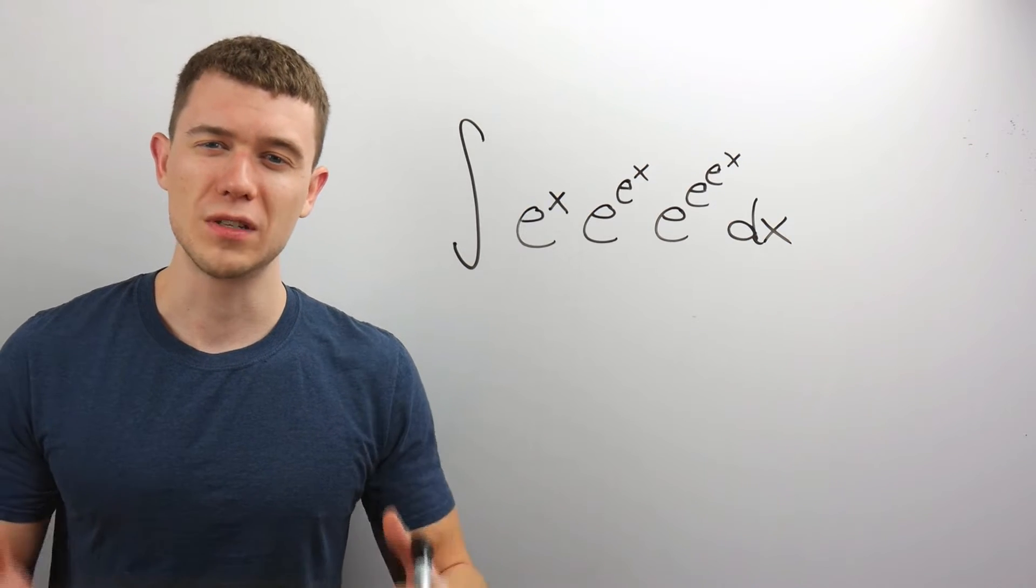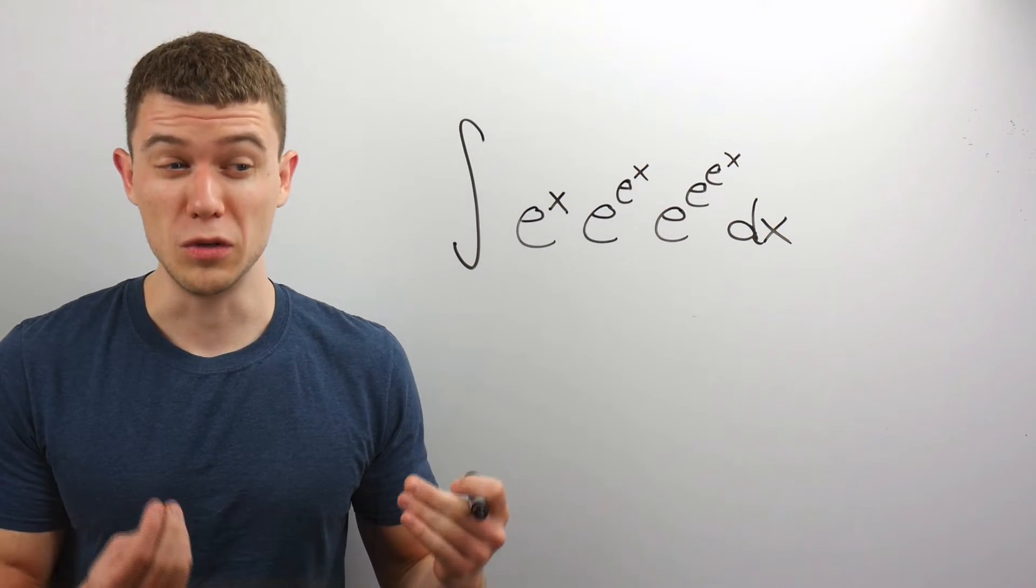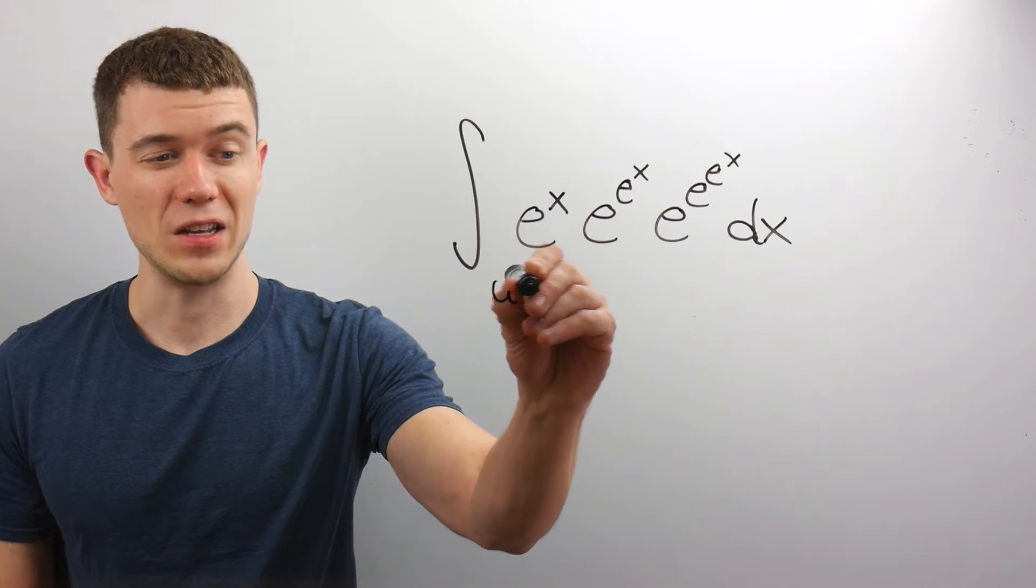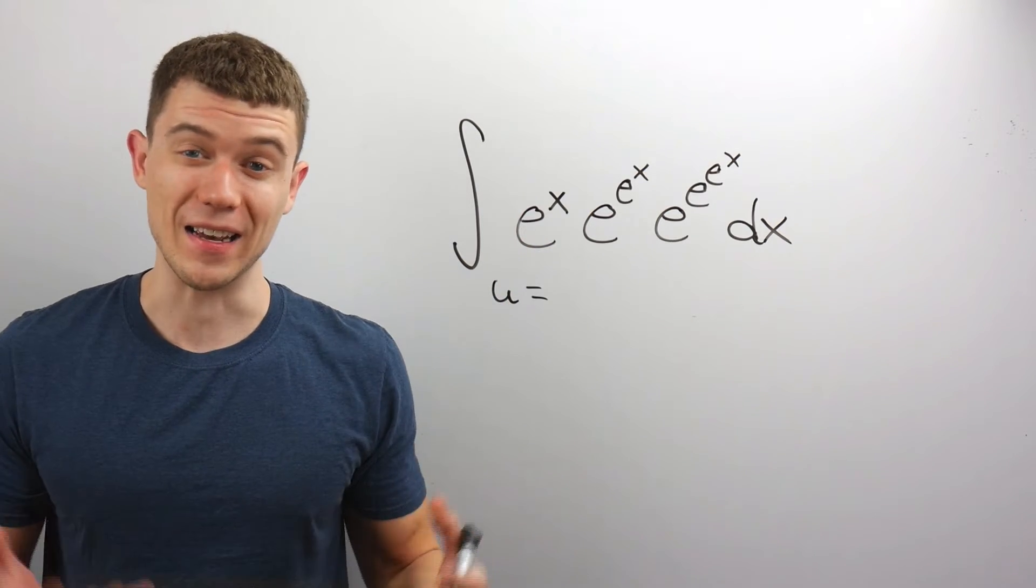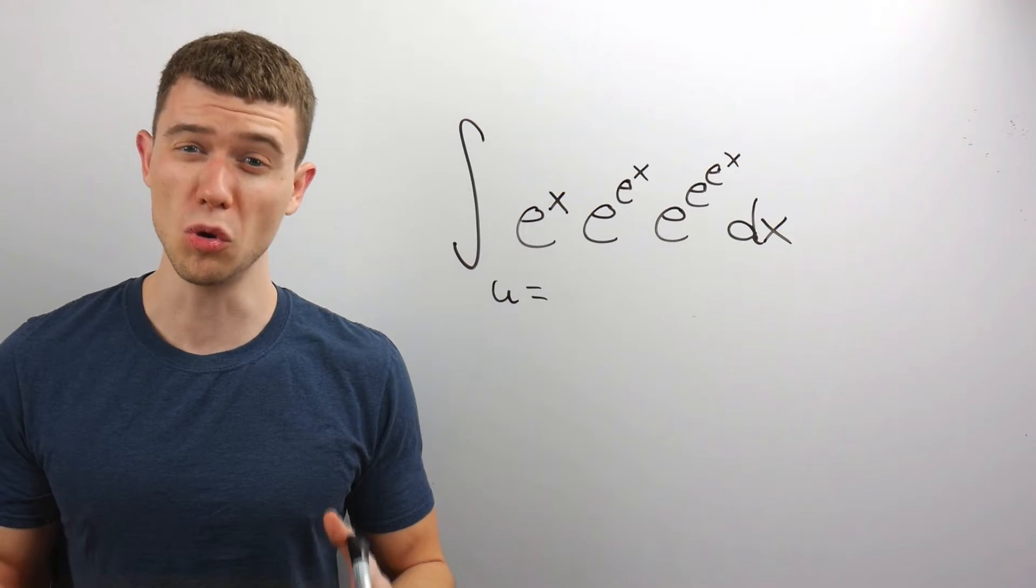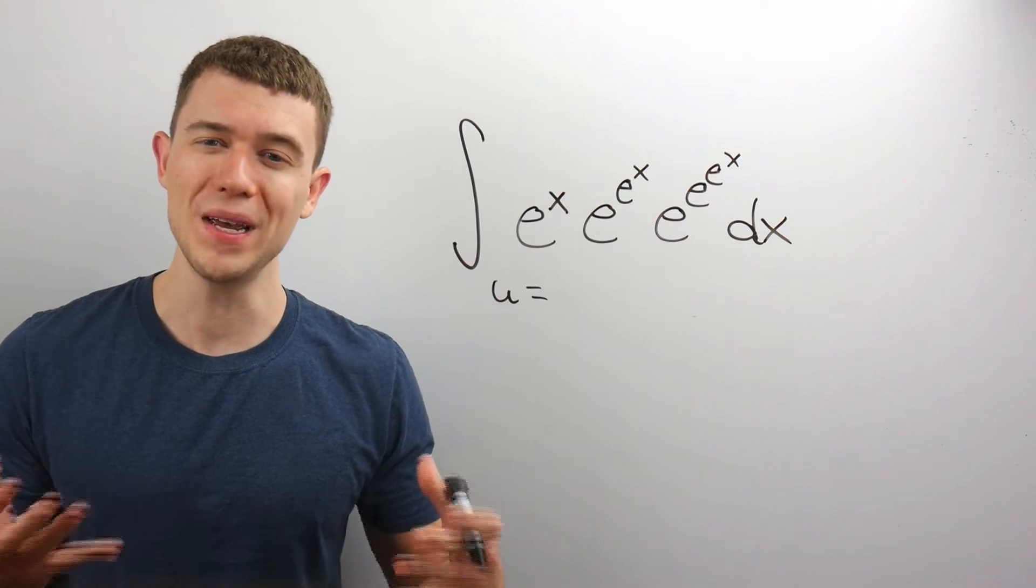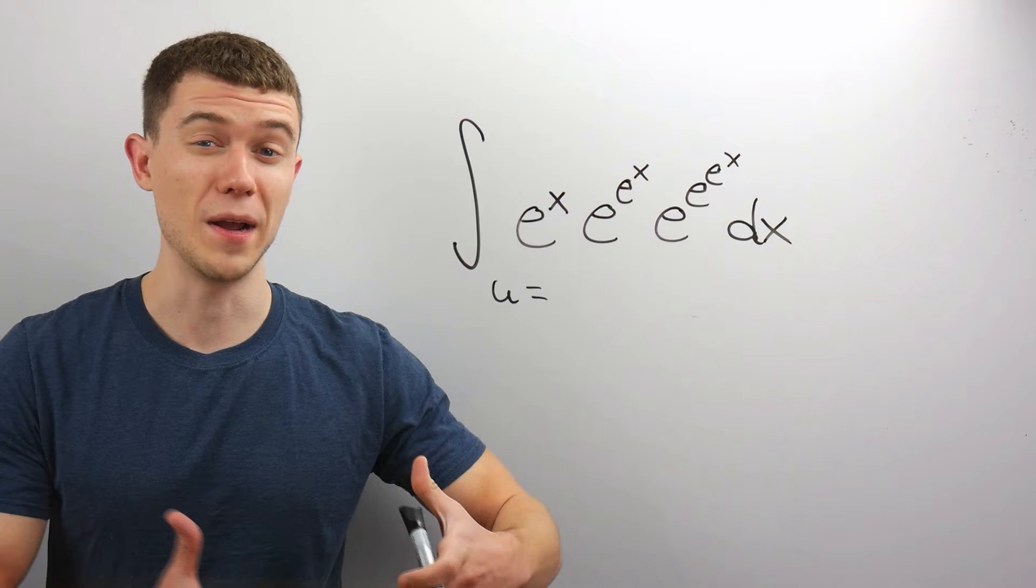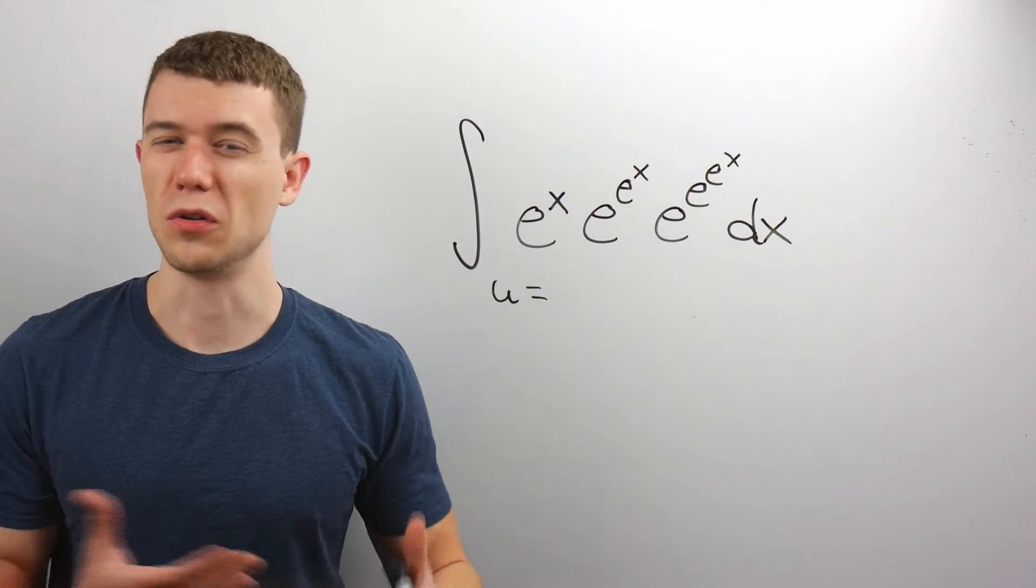you do a u-substitution, and you usually make u the thing in the exponent of e. We have some choices here, and we want to pick the one where when I make du, it's all going to work out.